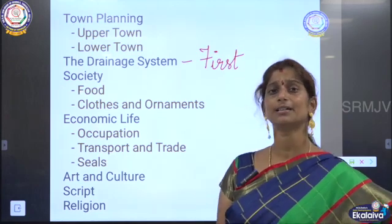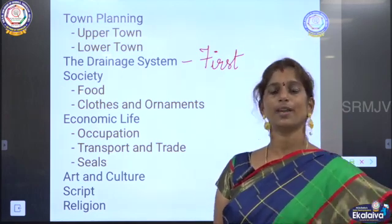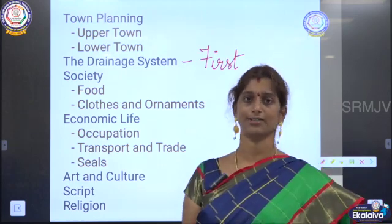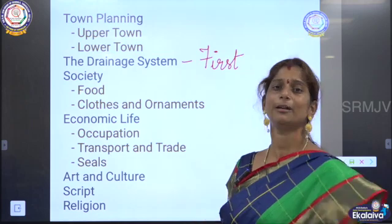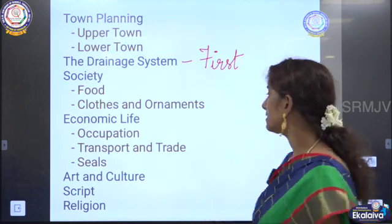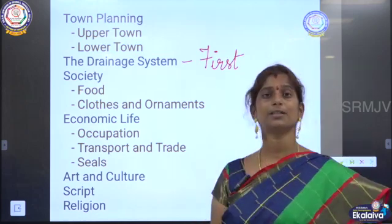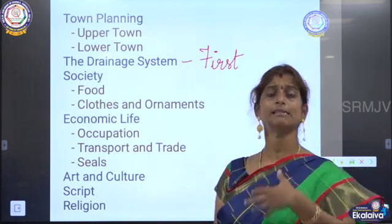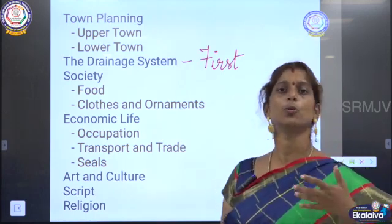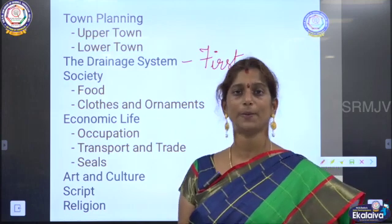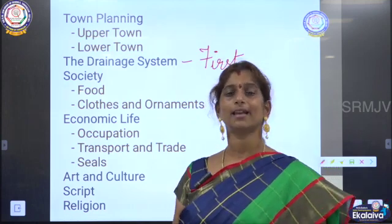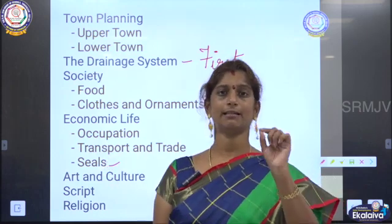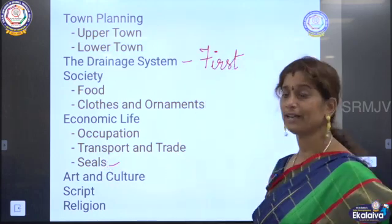We have already seen that the clothes were made up of cotton from the new stone age itself. How it developed when it comes to Harappan civilization, we are going to see about that. And then about the economic life, that is the trade or the transport, the work people were doing, the occupations — all these things along with the seals. We are going to see all this in the topic called economic life.